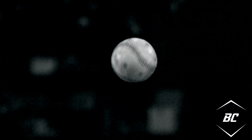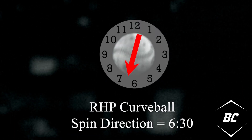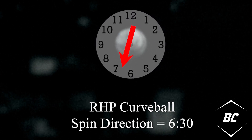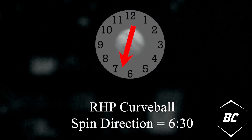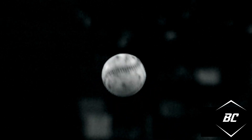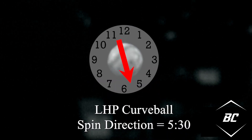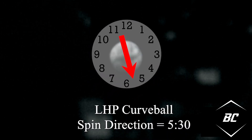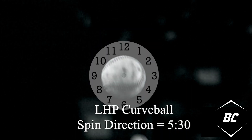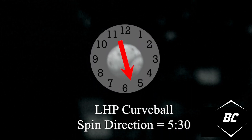Here's another example — a right-handed pitcher who throws a curveball. This curveball with topspin breaks downward, and when looking at the clock it spins in the direction from 6:30, which is how we get the expression a '12-6 curveball.' Once again, if you're comparing opposite-handed pitchers, a 6:30 spin direction for a righty would be comparable to 5:30 for a lefty, since righties and lefties act as mirror images of each other.